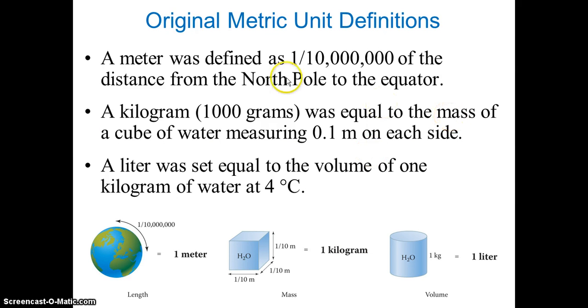So those are basic units. Now, how were original metric units defined? A meter was defined as one ten-millionth of the distance from North Pole to equator. A kilogram,